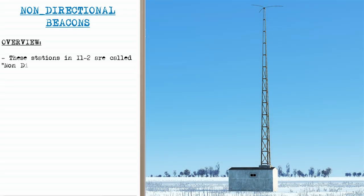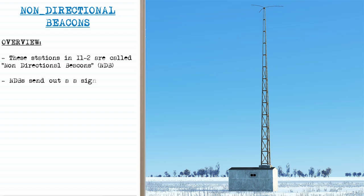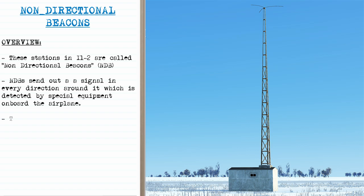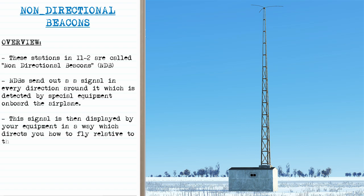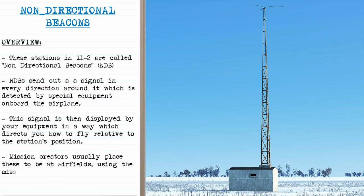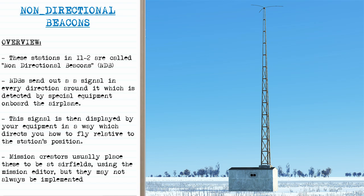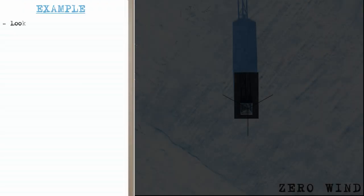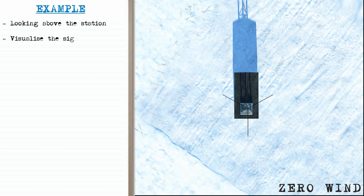These stations in IL-2 are non-directional beacons, or NDBs, and they send out a signal in every direction around them. This is detected by special equipment on board the airplane, and this signal is then displayed by your equipment in a way which directs you how to fly relative to the station's position. Mission creators usually place these at airfields using the mission editor, but they may not always be implemented. To get a brief understanding of how NDBs work, we're going to go to a top-down view.